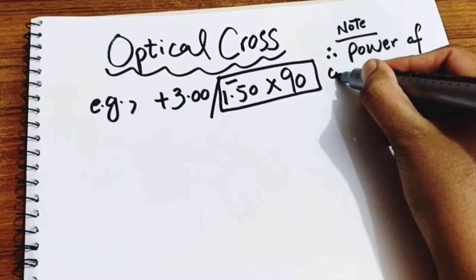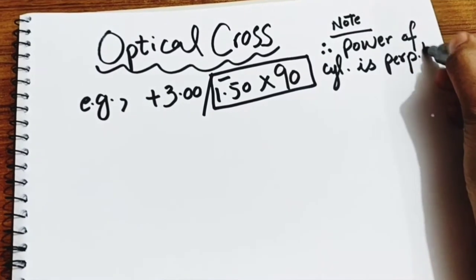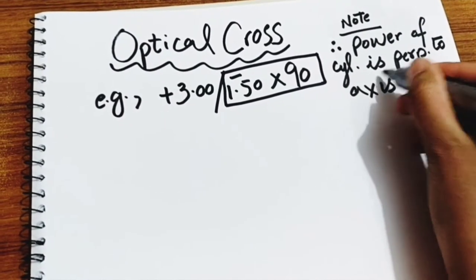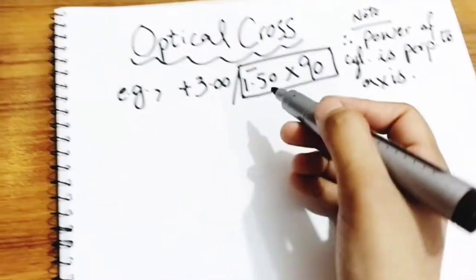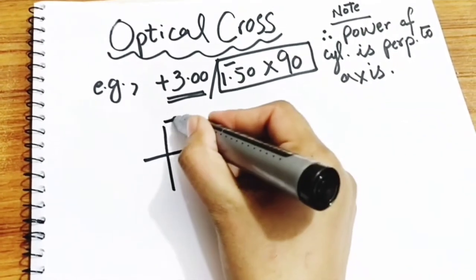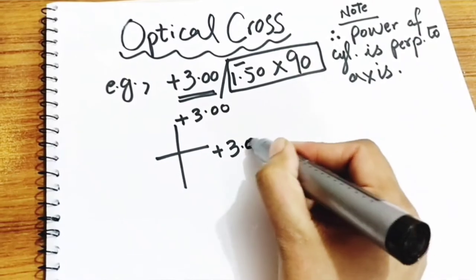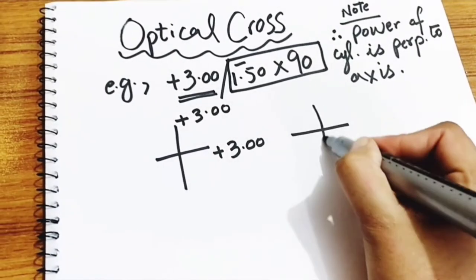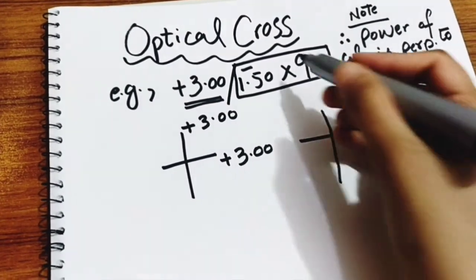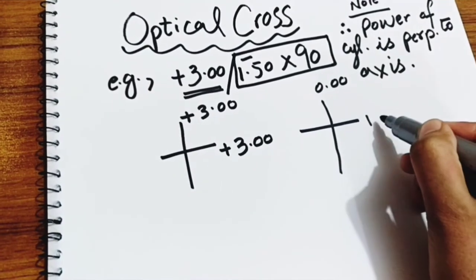In this example, -1.50 x 90 means power of cylinder is at 180. +3.00 sphere means spherical power is in both meridians, horizontal and vertical. Since power of cylinder is perpendicular to axis, we have -1.50 at 180 and 0.00 at 90.